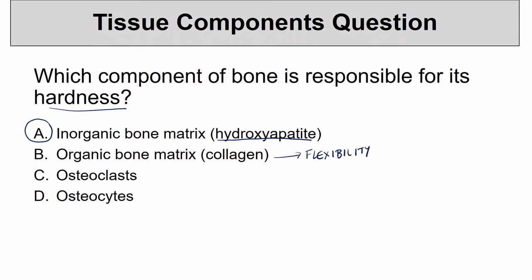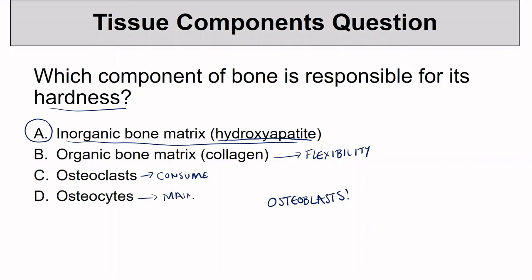Which cells begin the hardening, or the calcification process of bone? Those are going to be osteoblasts — important for the hardness of bone as well, but the absolute best answer for hardness is hydroxyapatite. What do osteoclasts do? Those consume or break down bone. And osteocytes? Those maintain bone.